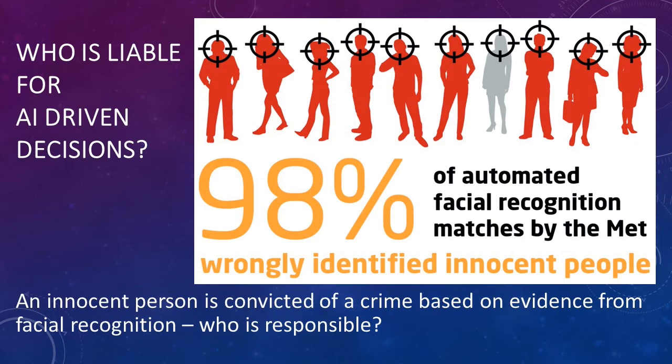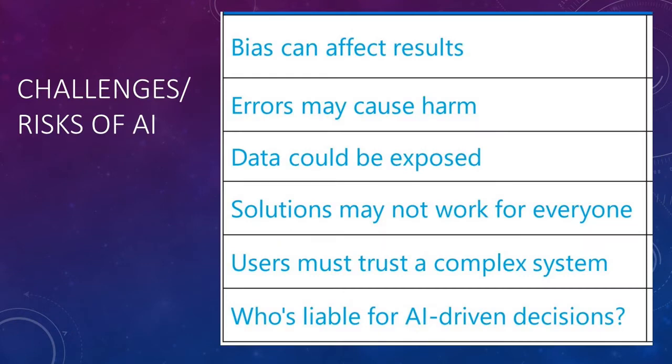A sixth challenge asks: who is liable for AI-driven decisions? An example would be an innocent person who is unjustly convicted of a crime based on evidence from facial recognition — so who is responsible for that? These challenges and risks faced by AI today are what we have to keep in mind.